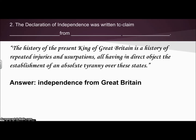Number two: the Declaration of Independence was written to claim blank from blank. In the Declaration we read, the history of the present King of Great Britain is a history of repeated injuries and usurpations, all having in direct object the establishment of an absolute tyranny over these states. So the Declaration of Independence was written to claim independence from Great Britain.